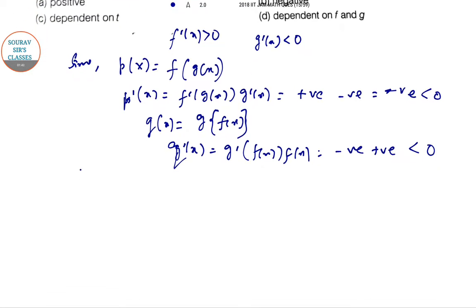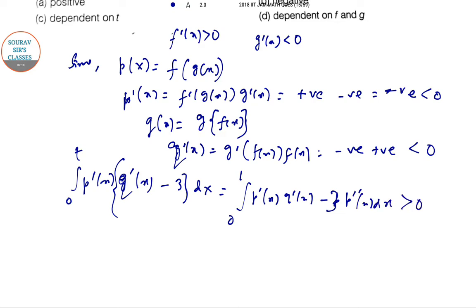If you go for the integration, integral from 0 to t of [p'(x)q'(x) - 3] dx equals integral from 0 to t of [p'(x)q'(x) - 3p'(x)] dx. This will be positive since p'(x) · q'(x) is positive and -p'(x) is also positive. Since the final sign is positive, we can go for option number a.